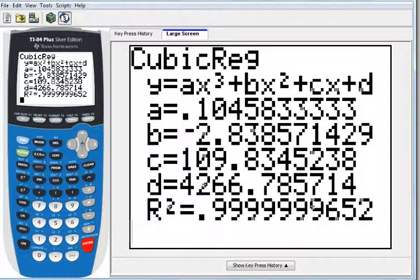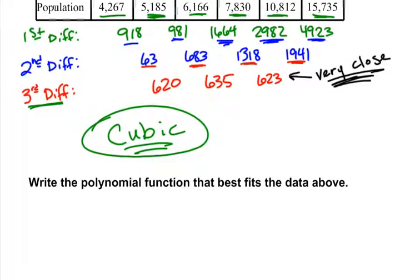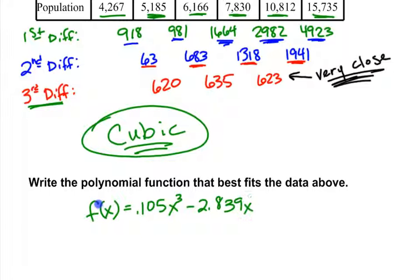Taking that information and writing out our answer, the polynomial function that best fits the data is f(x) equals 0.105x to the third minus 2.839x squared — rounding to three decimal places, the thousandth place — plus 109.834x plus 4266.786.